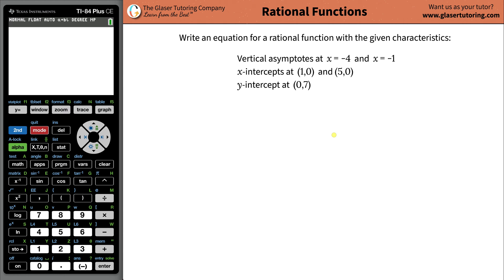Hi, I'm Andrew Glazer. Thanks so much for tuning in today, because I'd like to teach you how to write an equation for a rational function with these given characteristics: vertical asymptotes at x being negative four and x being also negative one, and the x-intercepts of one and five, and the y-intercept of seven.